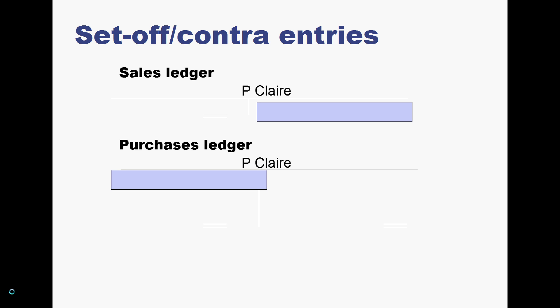Let's start off by putting in the sale. So the sale during the year increases debtors in P.Claire's account — P.Claire is the debtor — so that's a debit entry of £300. Then let's record our purchase from P.Claire. We've purchased £400, so that's a credit entry in P.Claire's account in the purchase ledger, because we are liable to pay P.Claire £400.